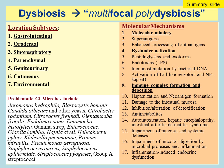Hafnia alvei is another problematic microbe. Helicobacter pylori is associated not only with migraine headaches but also with Sjogren's syndrome. Klebsiella pneumoniae is associated with the autoimmune condition ankylosing spondylitis. Proteus mirabilis is associated with rheumatoid arthritis. Pseudomonas aeruginosa has been seen in patients with autoimmune conditions affecting their nervous system. Staphylococcus aureus, Staphylococcus epidermidis, Staphylococcus pyogenes, and Group A streptococci have all been associated with autoimmune phenomena.